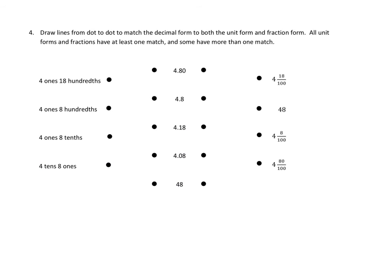Let's take a look at one more. This time, we are going to draw lines from dot to dot to match the decimal form to both the unit form and the fraction form. All unit forms and fractions have at least one match, and some have more than one match. Uh-oh. Okay, let's take a look. This one looks like it's in unit form. 4 1s and 18 100ths. 4 1s and 18 100ths. Let's see if that has 4 1s, but that doesn't look like 18 100ths. That's 4 1s, but that doesn't look like 18 100ths. This is 4 1s, and hey, that looks exactly like 18 100ths. I think we've got one. I'm going to go ahead and match that up right away, and I'll keep looking and see if there's another match. Is this 4 1s and 18 100ths? No, that's 4 1s and 8 100ths, and this looks like 48. That's not going to do it. All right,